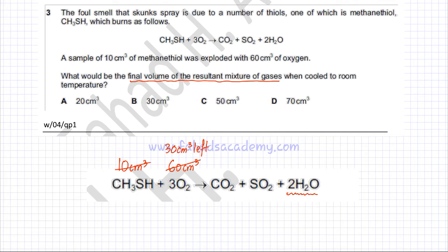Remember, the mole ratio and volume ratio in which gases react are the same. So 1 reacts with 3, meaning 10 would react with 30, which means 30 cm³ of O₂ is going to be left behind.